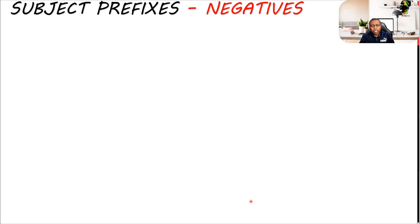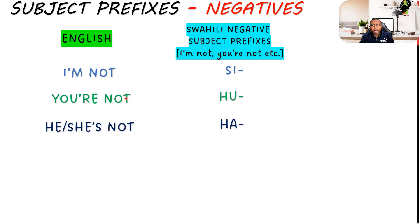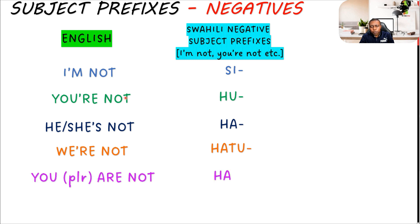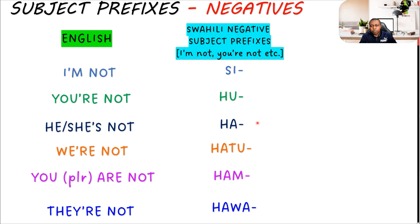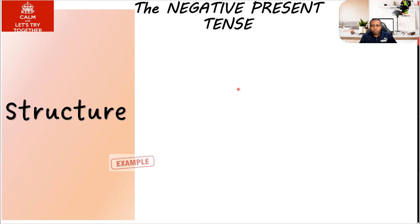Let's look at it more deeply. We're going to start with our subject prefixes on the negative. I am not in Swahili: si. You are not: hu. He or she is not: ha. We are not: hatu. You all, you plural, are not: ham. And they are not: hawa. These are going to be our subject prefixes — they start the first part of our sentences.